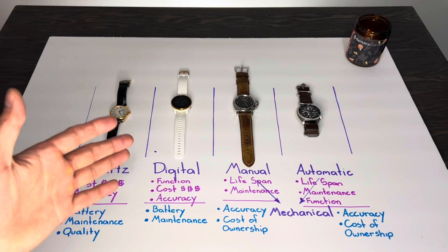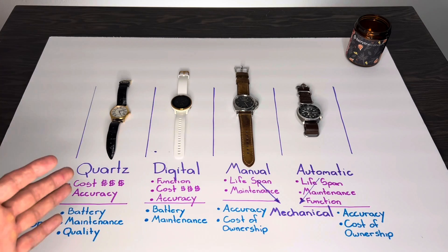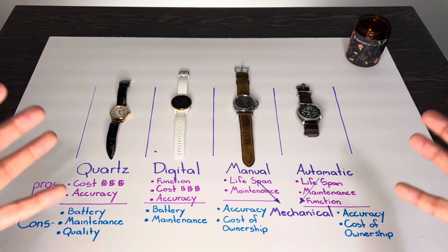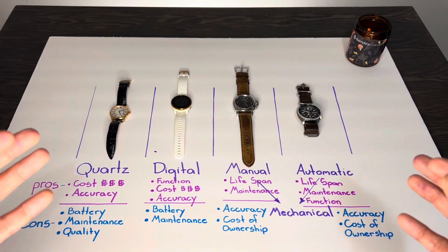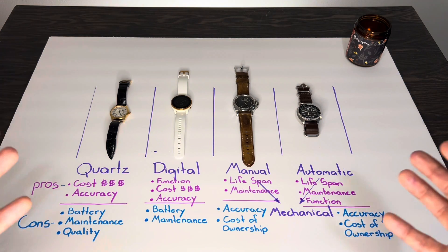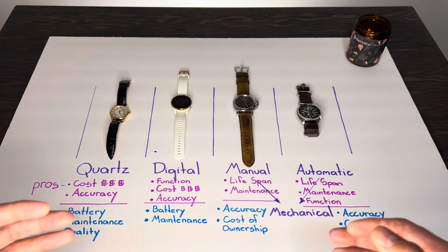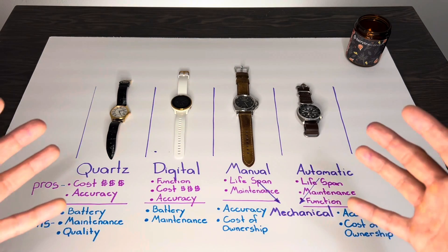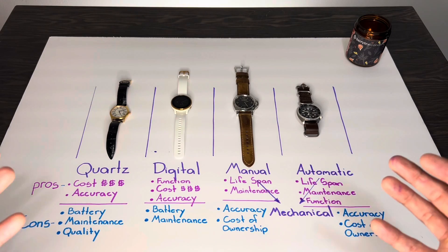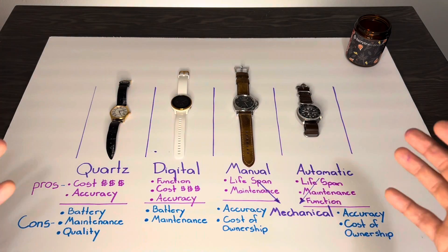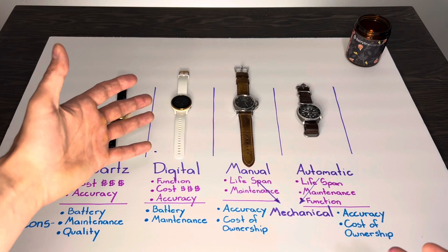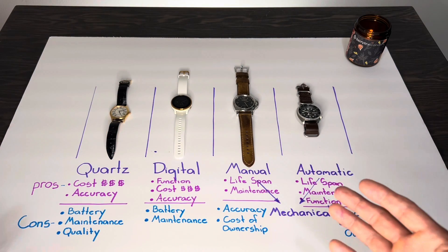Digital watches have the same drawbacks as quartz since they also require a battery. But the real downside of a digital watch is that once it breaks, it's essentially garbage — it would cost a fortune to source parts, definitely surpassing the price of the watch itself. Additionally, most digital watches and smartwatches have a very short lifespan, as advancing technology makes them obsolete quickly.